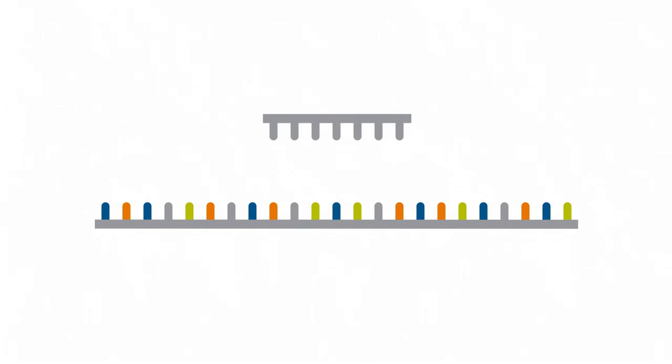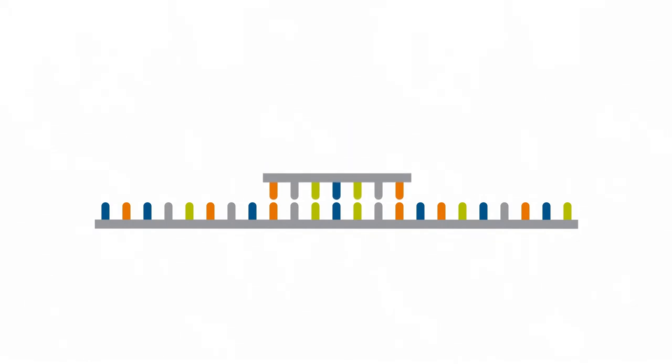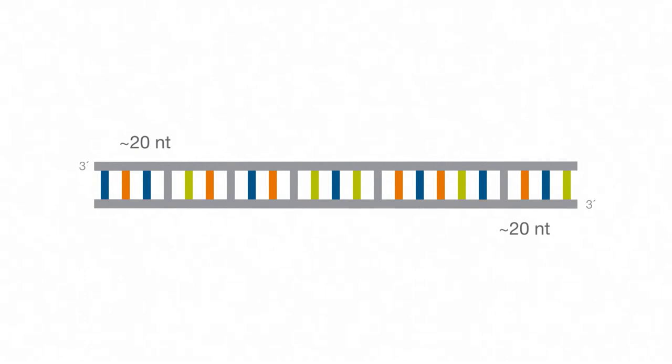Once the cDNA is generated, make sure to use the right primers for qPCR. You will need to use a bioinformatics tool to design your primers, such as Applied Biosystems Primer Express software. In general, primers should be 20 nucleotides in length, with a GC content in the 30 to 70% range.